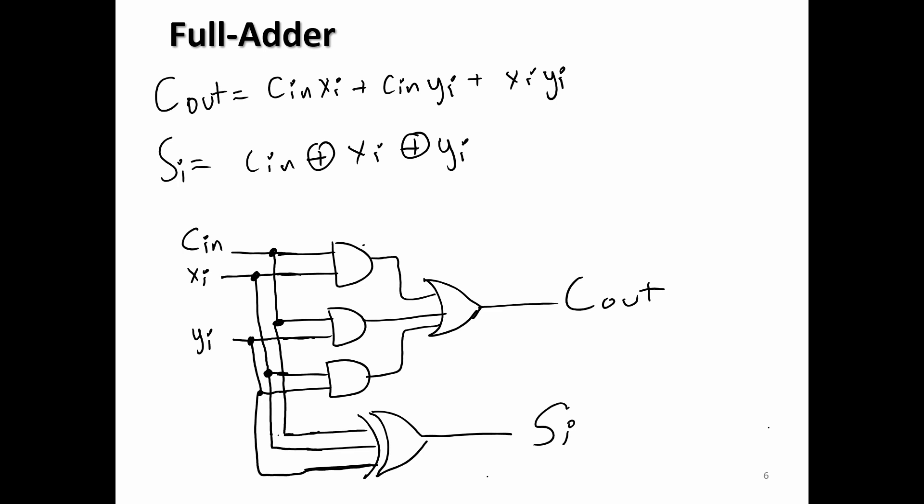The block diagram for the full adder is just an FA, square with an FA, si, c out. Then we have x, y, and c in.